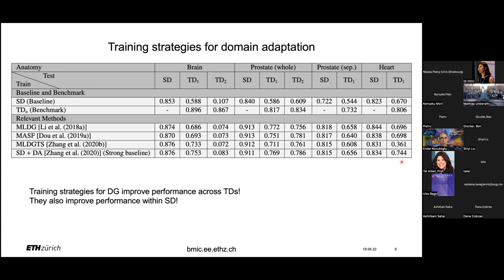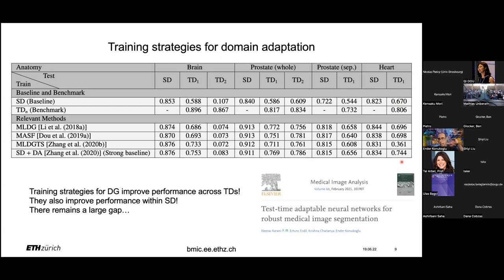We started to wonder: these domain generalizations work very well, but there still seems to be a gap. The question is, can we borrow some ideas from unsupervised segmentation and complement these models with a test time adaptation module? We worked on this and published a paper, and I want to discuss what we've done.